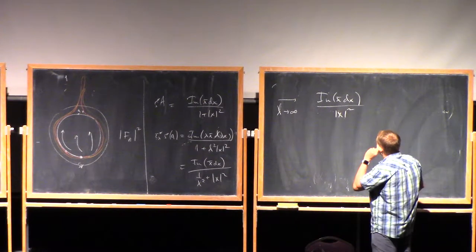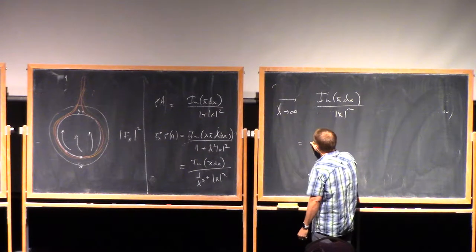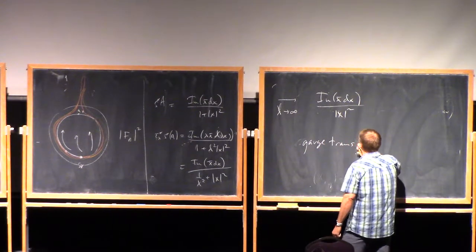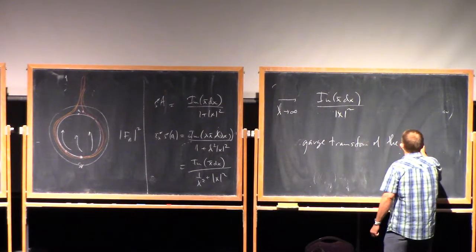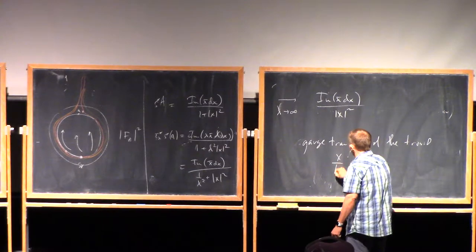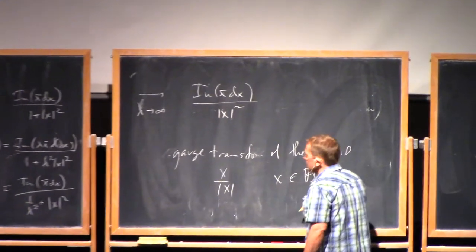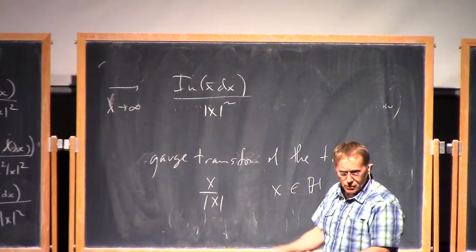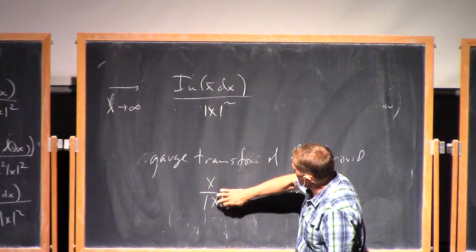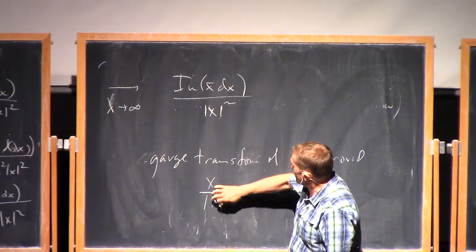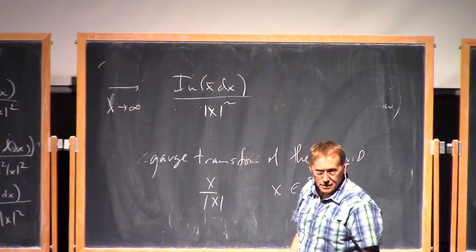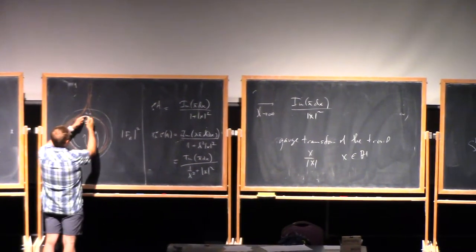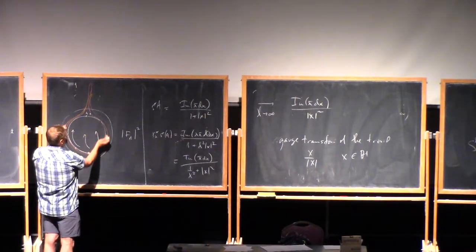This is gauge transform of the trivial connection by a singular gauge transformation. So again, x is a quaternion. This is imaginary part of quaternion. These are all, this is quaternion multiplication. This is a unit quaternion defined away from the origin. The curvature's going to zero away from this point. It's converging to a flat connection.